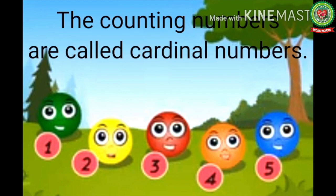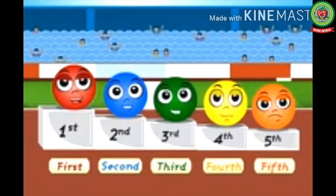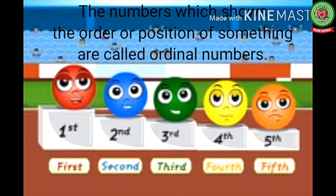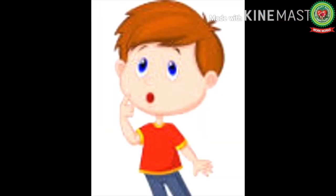Or if we want to find out in which position they stood up in a race — like the red one has come first, the blue one has come second, the green one has come third, the yellow one has come fourth, and the orange one has come fifth — the numbers which show the position or order of something are called ordinal numbers.